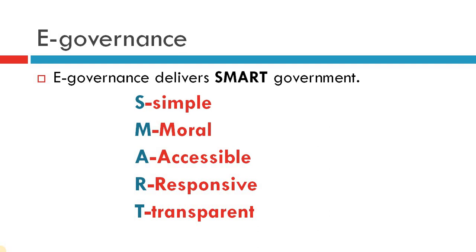E-governance is Simple because nowadays everybody is carrying smartphones and they can request services easily. Moral — as there will be transparency in the system, morally people will not be doing anything wrong. Acceptable — internet these days has been available to everyone, so it is easily accessible by anyone. Responsive — when we are raising a request, the government responds to that particular request immediately. Transparent — all the documents are linked these days and we can see documents available on the web and how the process is moving for our request.